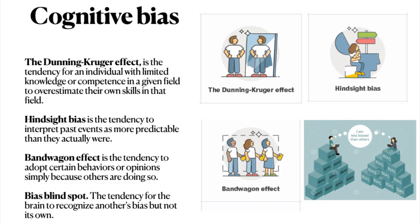The Dunning-Kruger effect is the tendency for an individual with limited knowledge or competence in a given field to overestimate their own skills in that field. Hindsight bias is the tendency to interpret past events as more predictable than they actually were. Bandwagon effect is the tendency to adopt certain behaviors or opinions simply because others are doing so. Bias blind spot is the tendency for the brain to recognize another's bias but not its own.